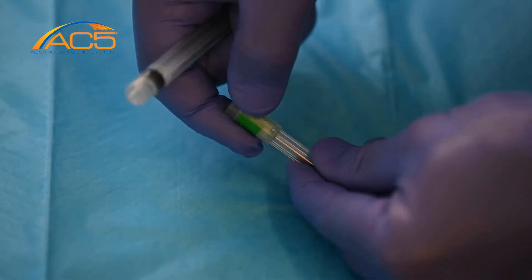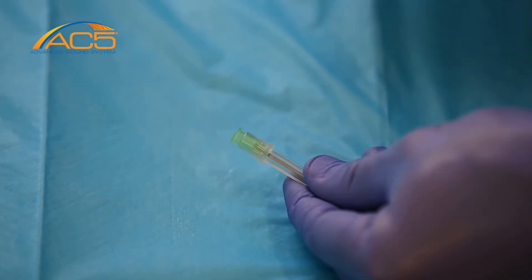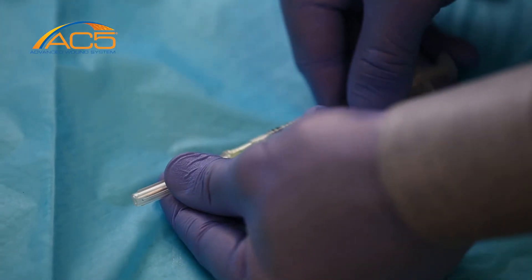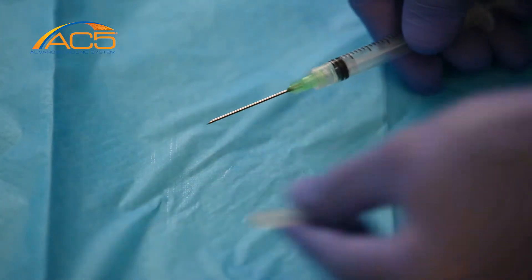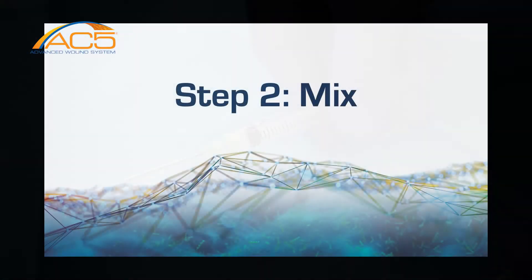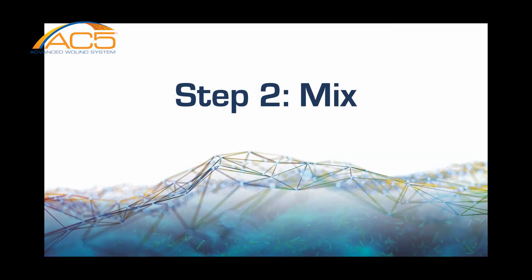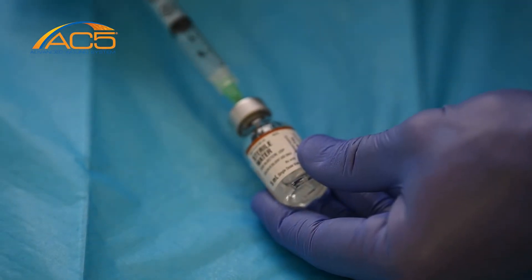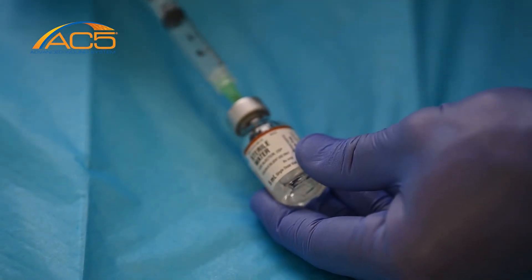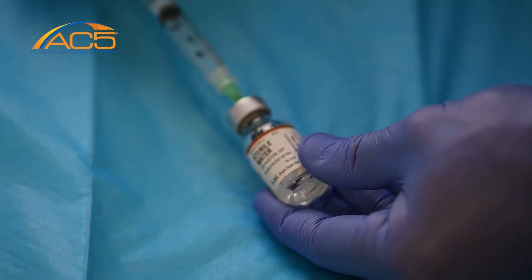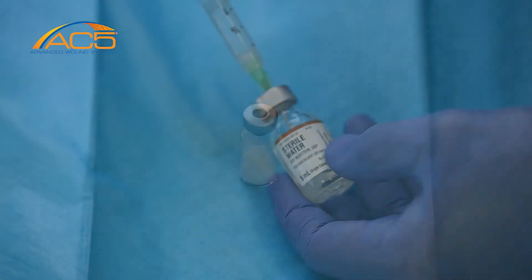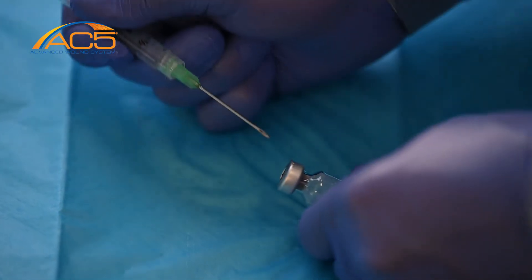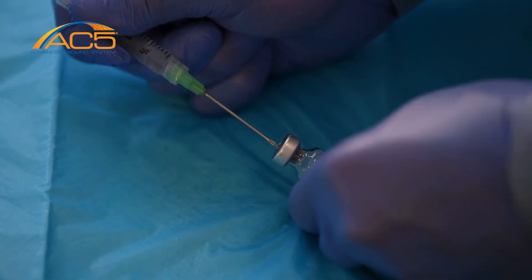Attach the 18-gauge needle to the 3-milliliter syringe. Draw 1.5 milliliters of sterile water into the syringe and transfer it into the AC5 peptide vial.